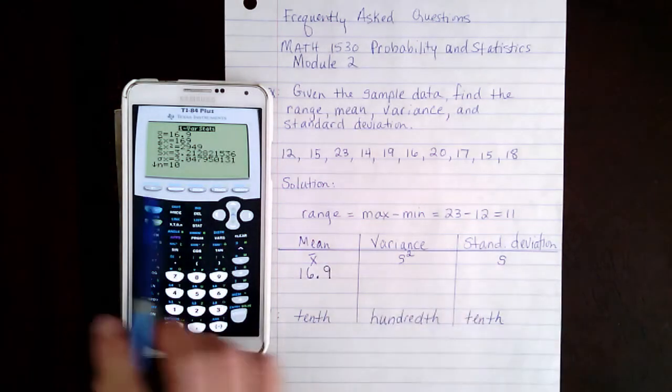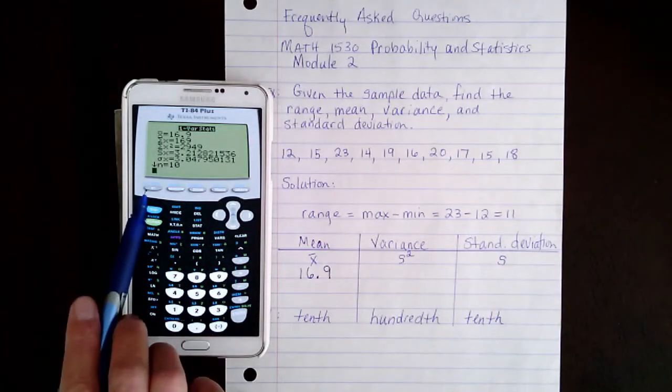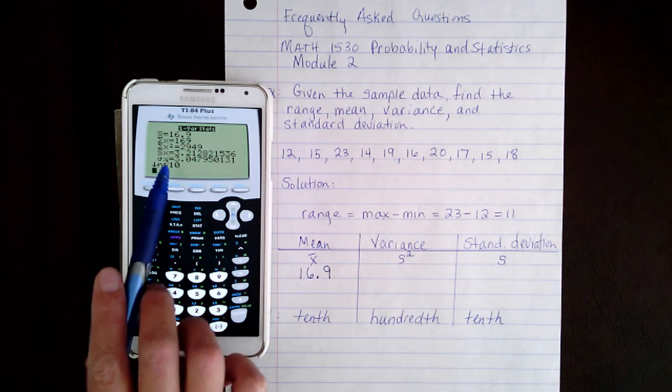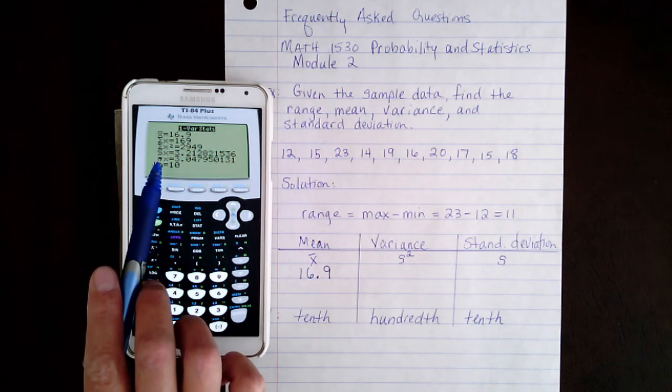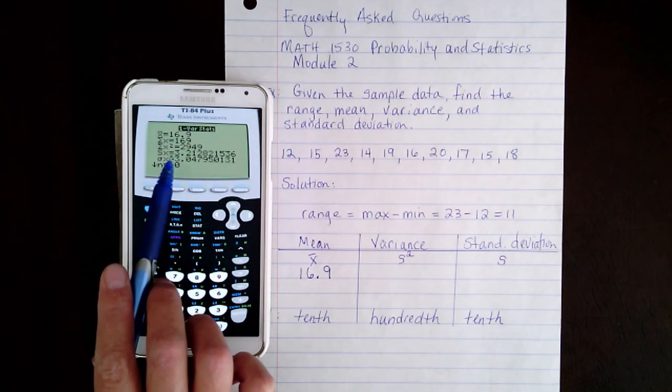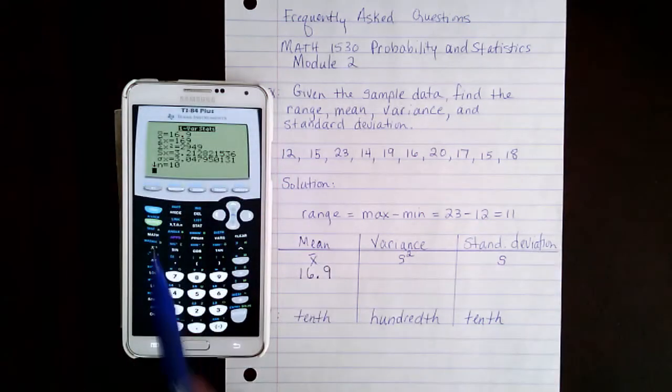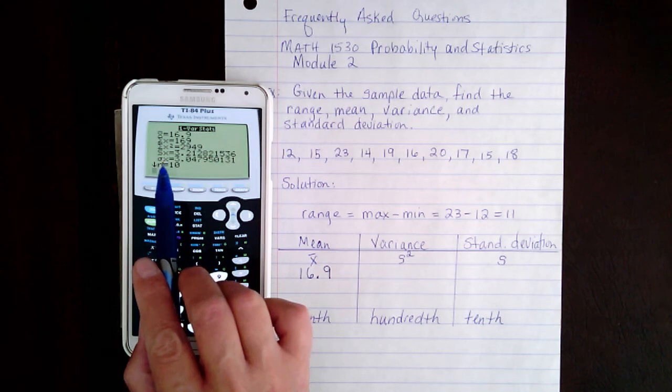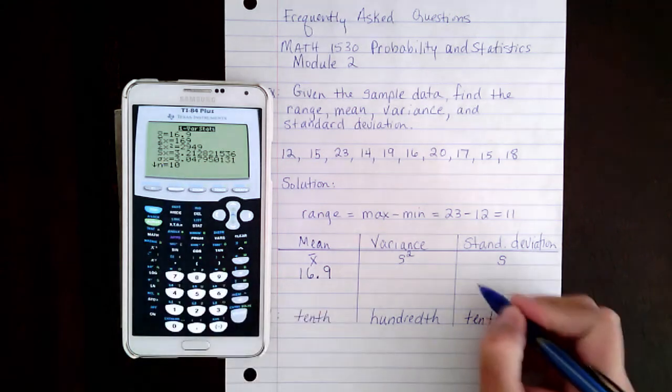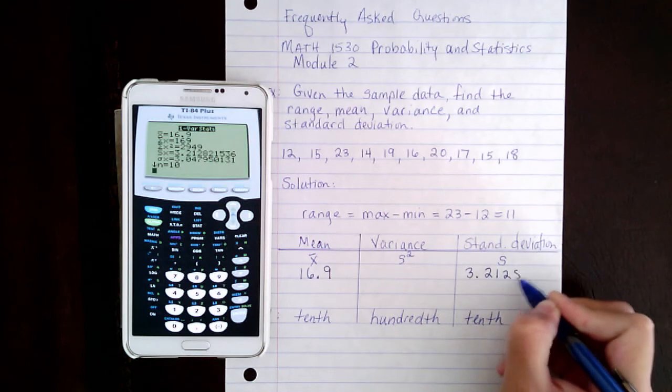And the variance is not actually listed here under one variable stats. Instead what we have to do is find the standard deviation. Since it's sample data, we use this one, S sub X. And I'm going to actually keep several digits after the decimal to avoid rounding error. So I'm going to write down the sample standard deviation, and that is 3.21282.